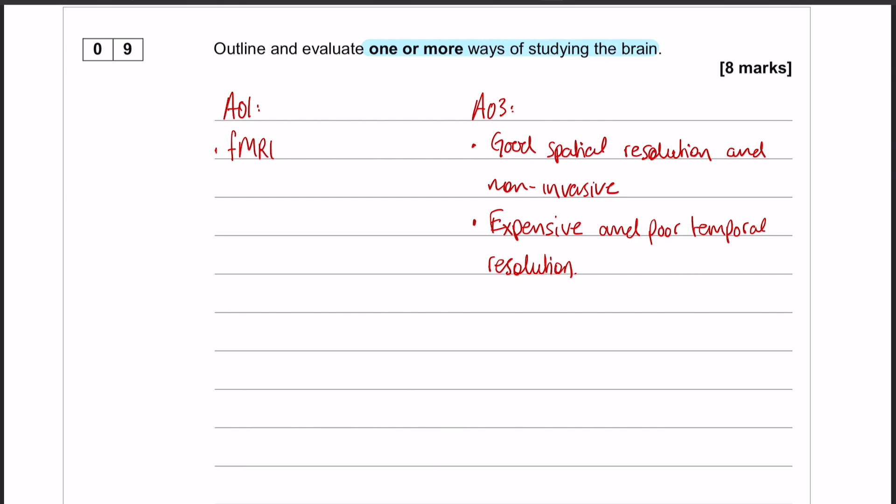All right, the mark distribution is, of course, three marks for the outline and five marks for the evaluation section, which means that you're going to want two evaluation paragraphs.